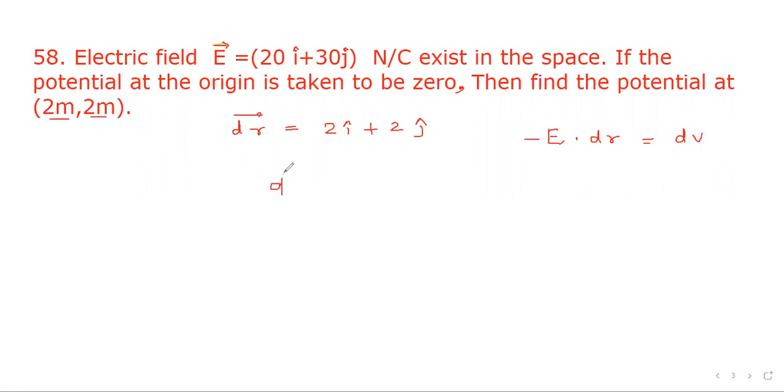dV means potential difference and that will be minus E dot dr, 20i cap plus 30j cap dot 2i cap plus 2j cap. So it will become minus 40 plus 60.